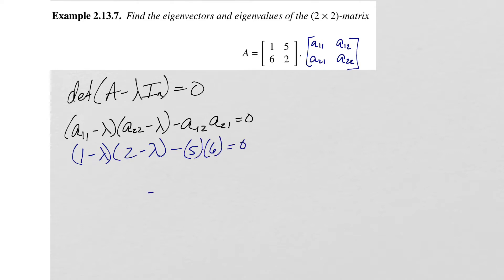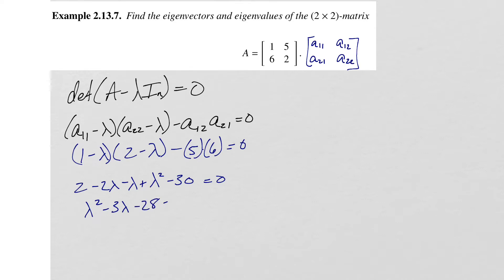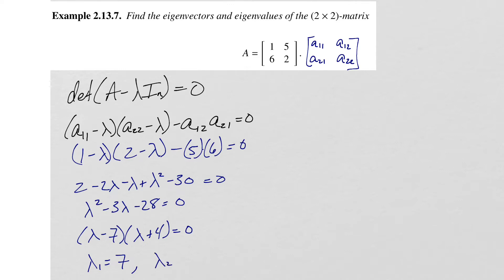We can solve this equation with a little algebra. Expanding gives us 2 minus 2 lambda minus lambda plus lambda squared minus 30 equals 0, which breaks down to lambda squared minus 3 lambda minus 28 equals 0. We can factor this as (lambda minus 7)(lambda plus 4) equals 0.